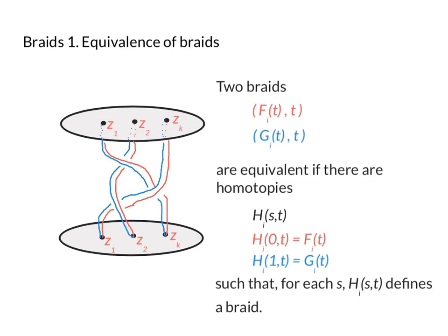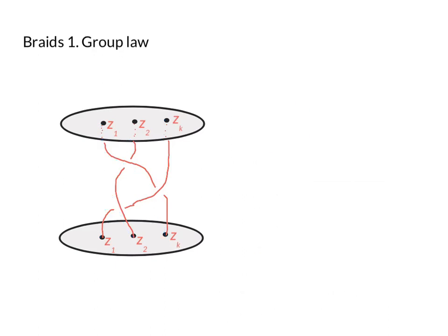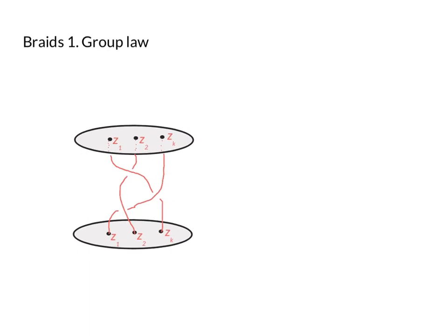The great thing about braids is they form a group. So now I'm going to tell you what the group structure is, and then we're going to see that actually this group, this braid group, is just the fundamental group of some space. So here's how we're going to multiply two braids together. I'm going to take this braid here and I'm going to make it smaller.